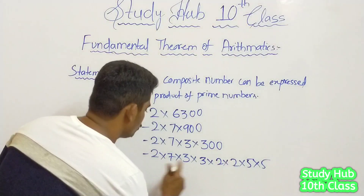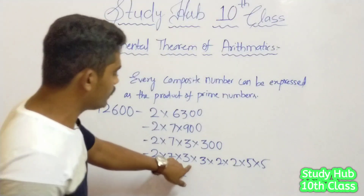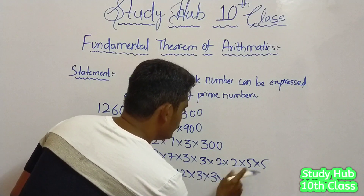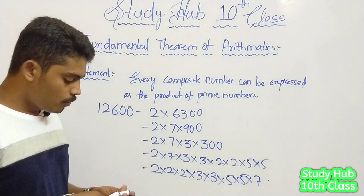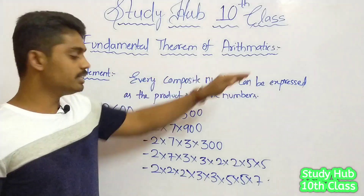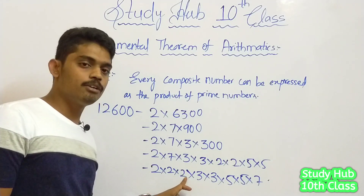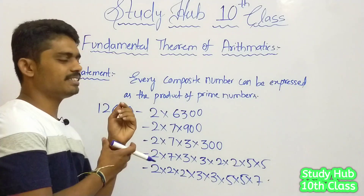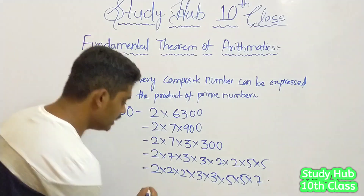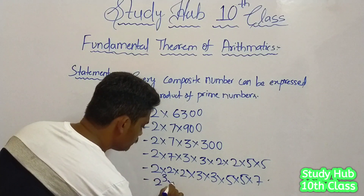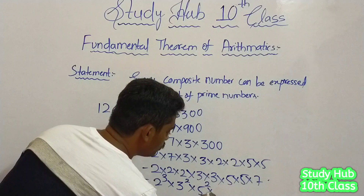For example, let us write all the 2s first. After 2, what is the next biggest number? 3. So 3 into 3. After that, 5. Here lies one more important concept which the fundamental theorem of arithmetic says: when the same primes are written together, they can be replaced in terms of their powers. How many 2s do we have? Three. So three 2s give 2 cubed, two 3s give 3 squared, and two 5s give 5 squared, and then 7.